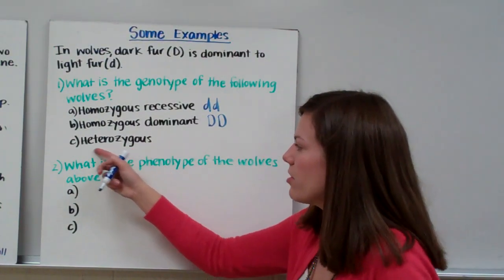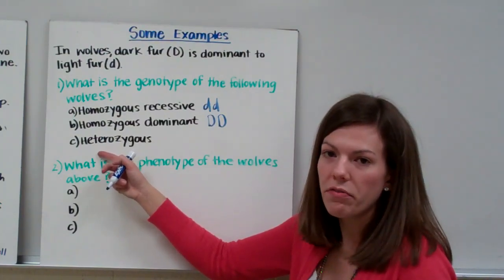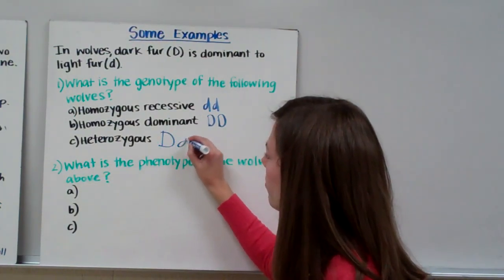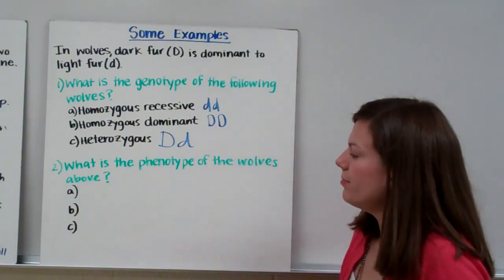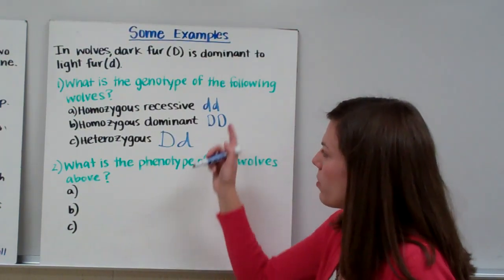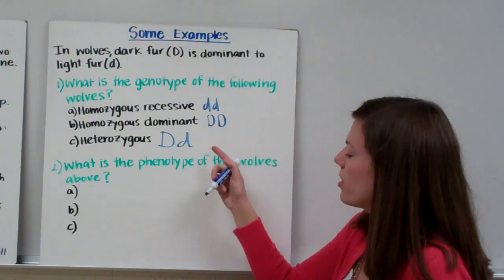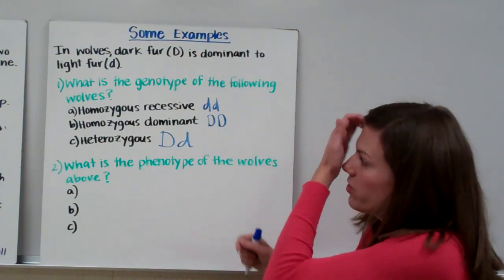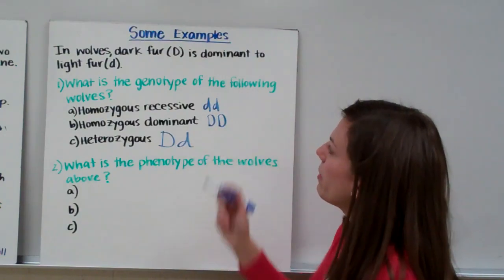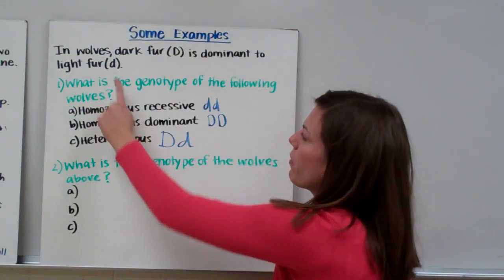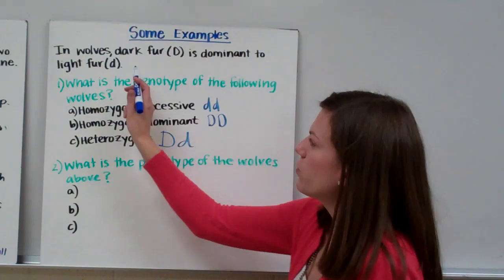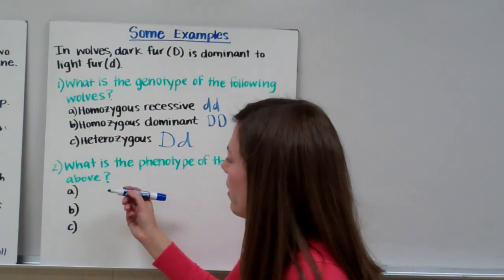Next is heterozygous. Heterozygous means different — you have two different alleles: one dominant and one recessive. Now, what is the phenotype of the wolves? The first one has little d little d. Little d codes for light fur. Since this wolf only has alleles for light fur, it must have light fur.